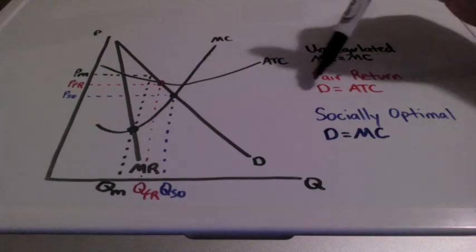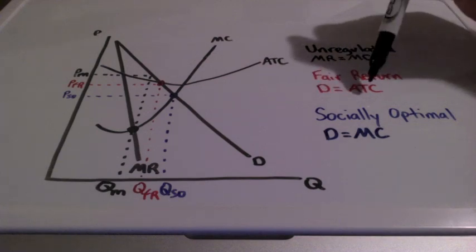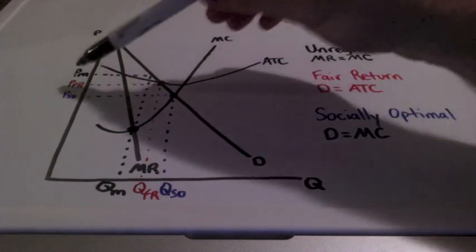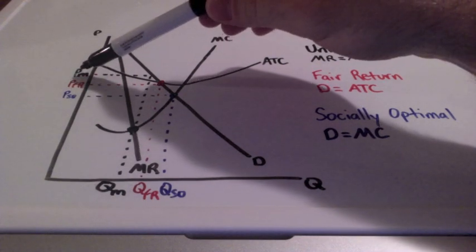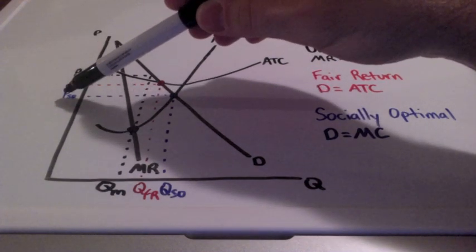And this is where price and quantity will be located where demand equals average total cost. So the fair return price is in between the unregulated price and the socially optimal price.